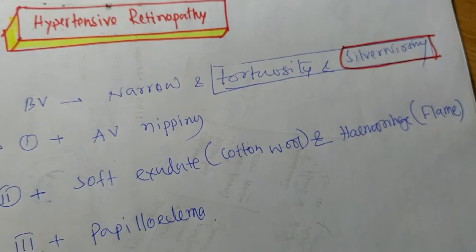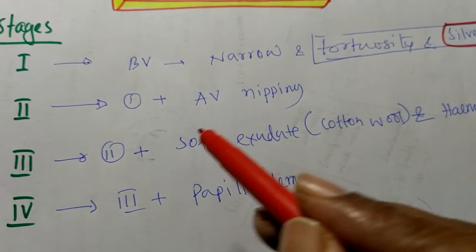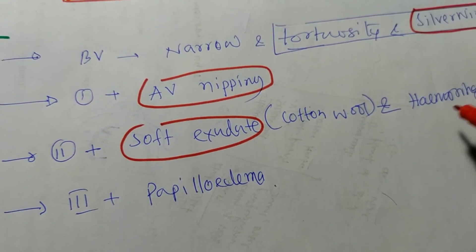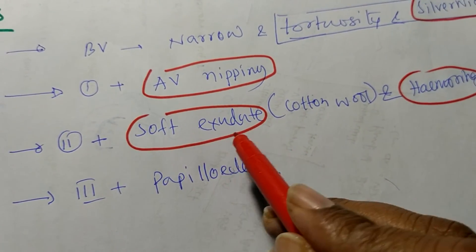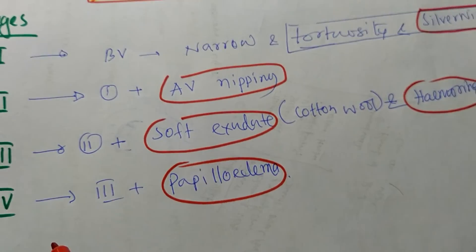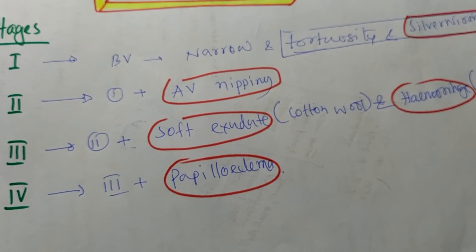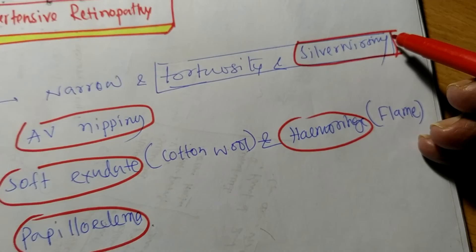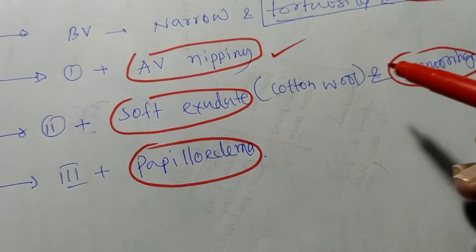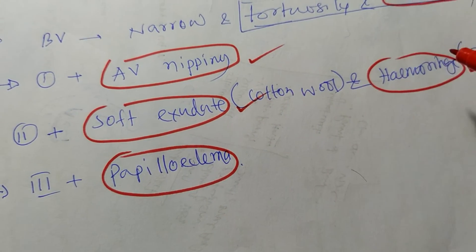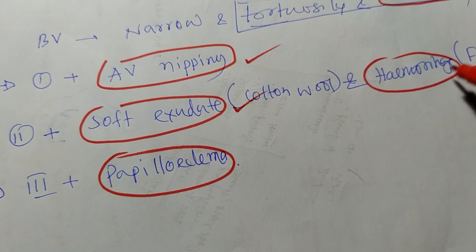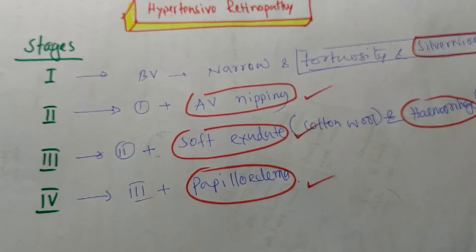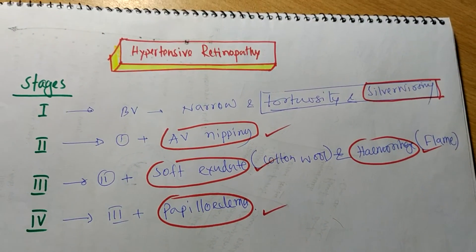Stage two means AV nipping. Stage three means soft exudate and hemorrhage — it may be just soft exudate, or hemorrhage, or both. Stage four means presence of papilloedema. So for every stage there is a specific term. This is all about the stages of hypertensive retinopathy in short. Thank you very much.